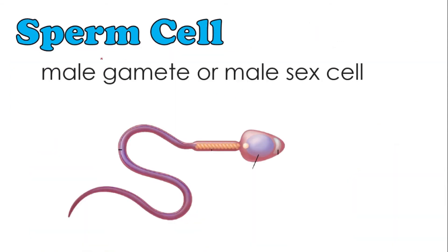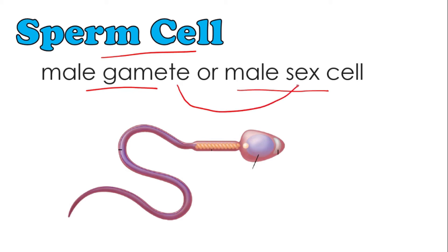We also have the sperm cell. The sperm cell is what we call the male gamete or male sex cell. Gamete is another term for sex cell — they mean the same thing. To summarize: testosterone is the male sex hormone, and the sperm cell is the male sex cell.